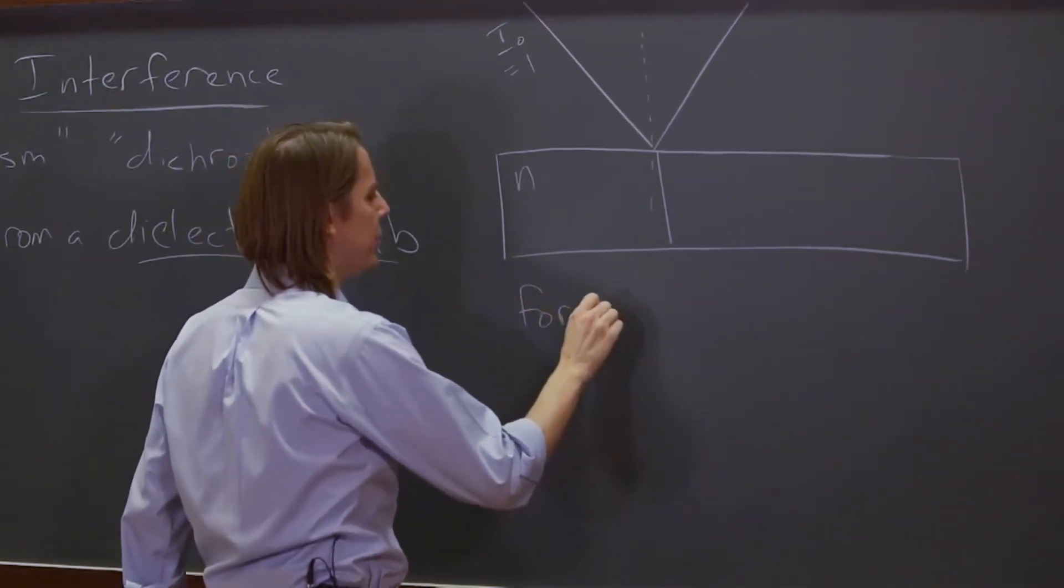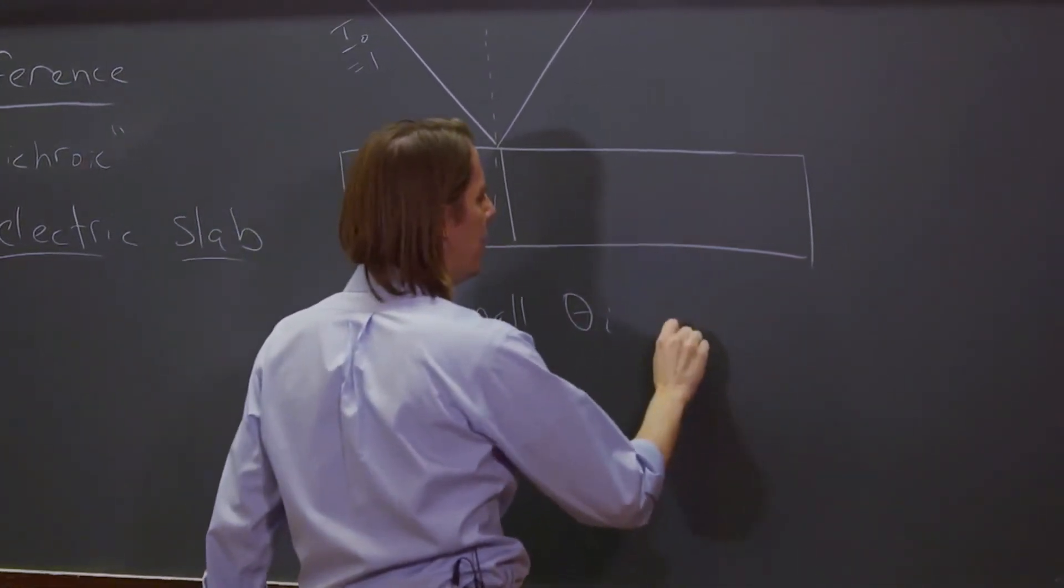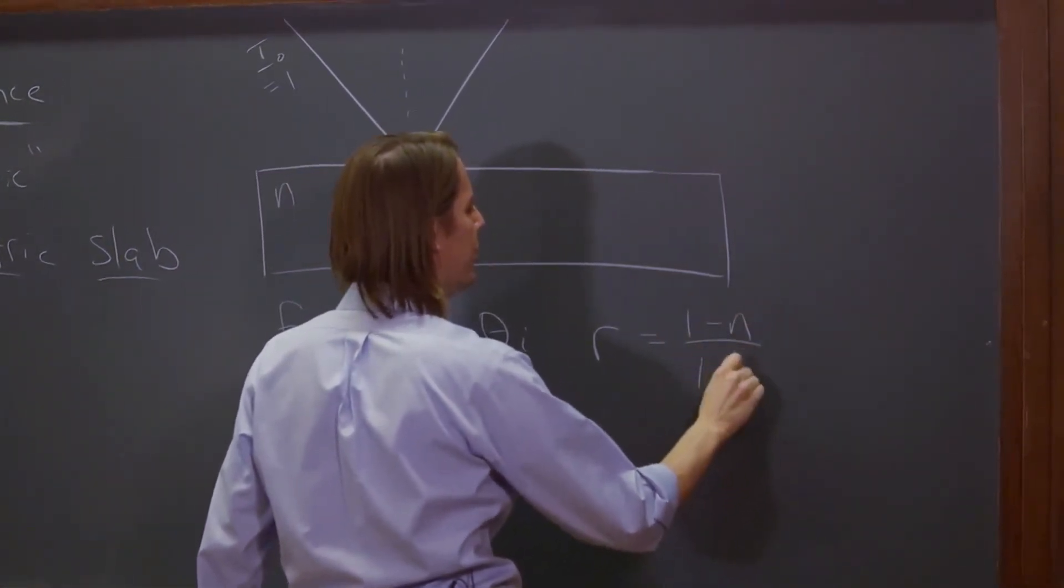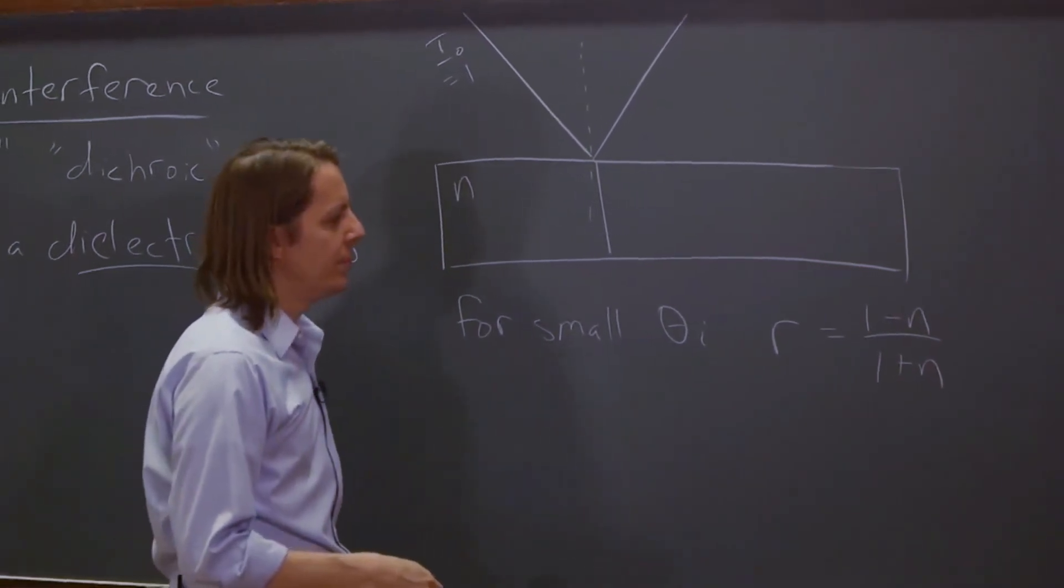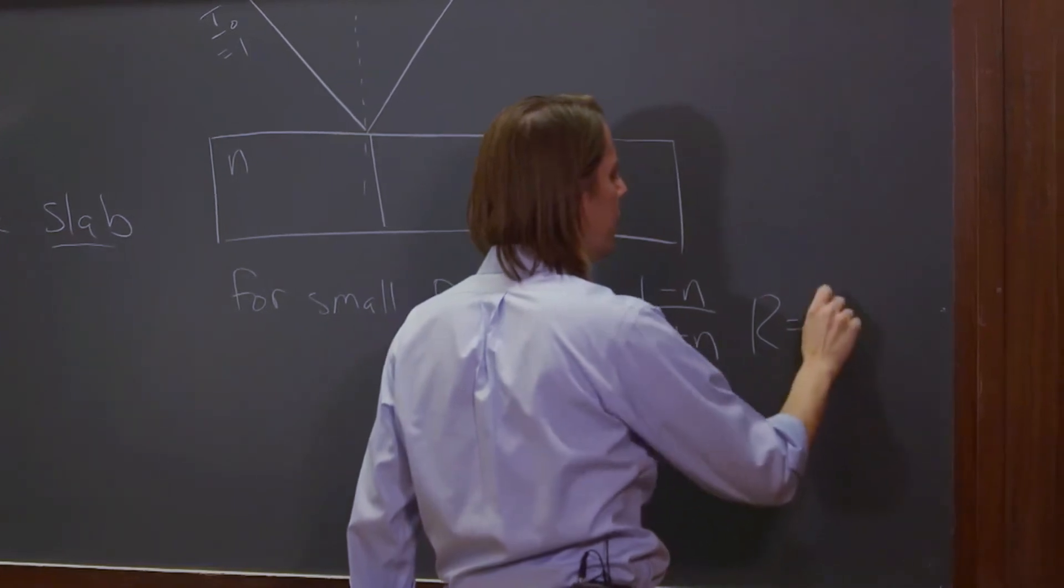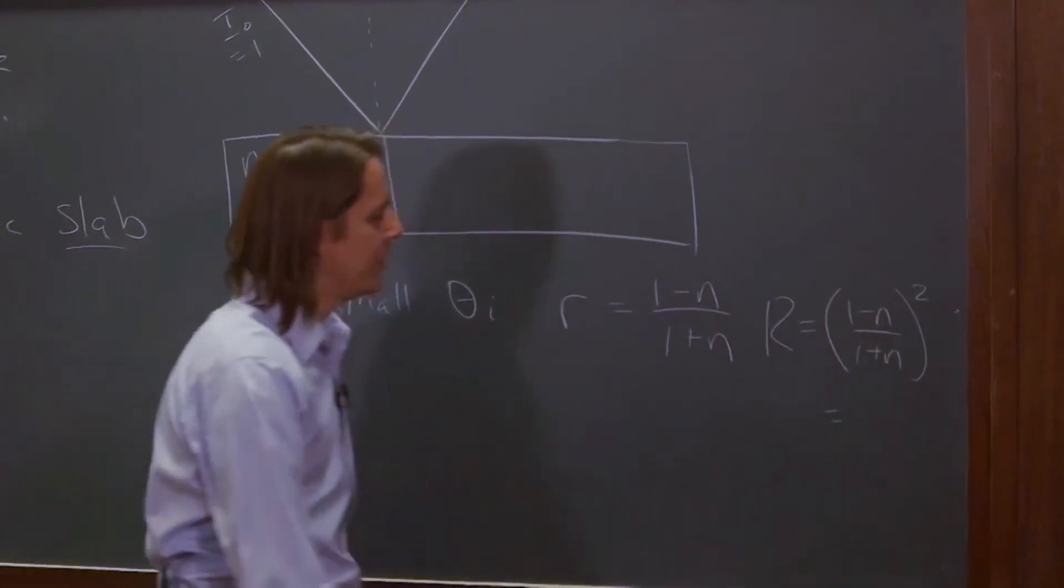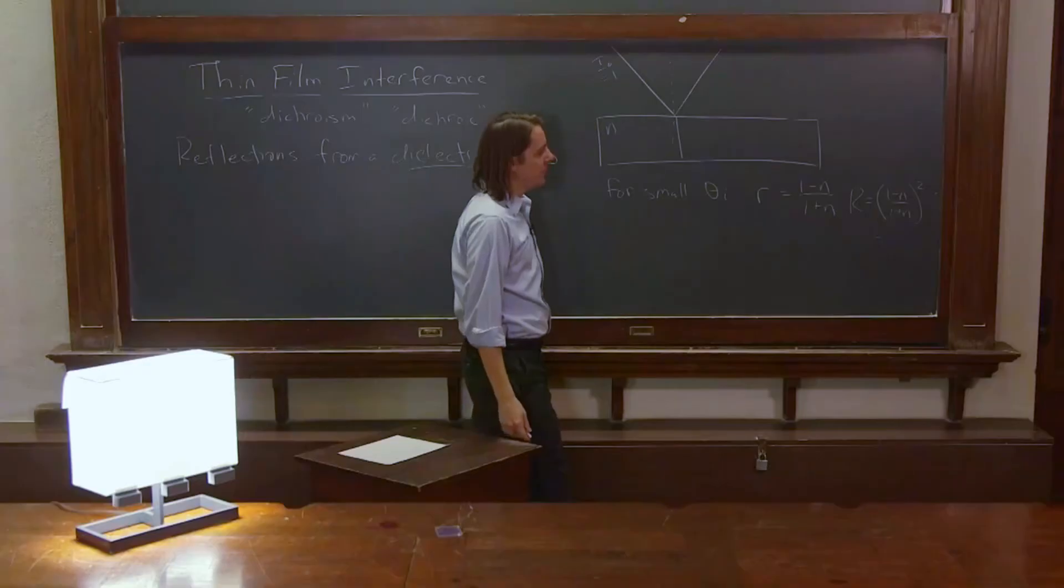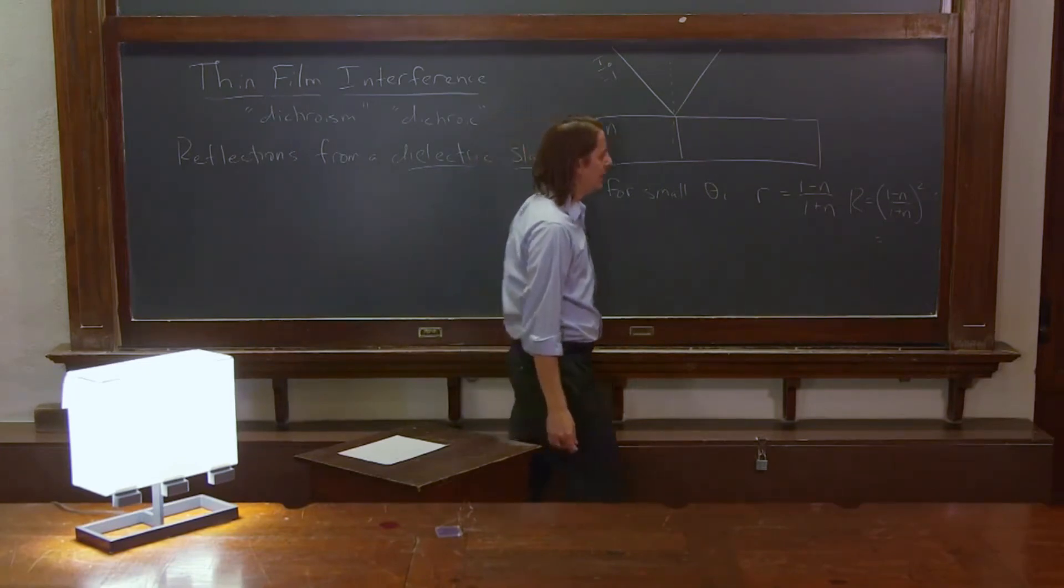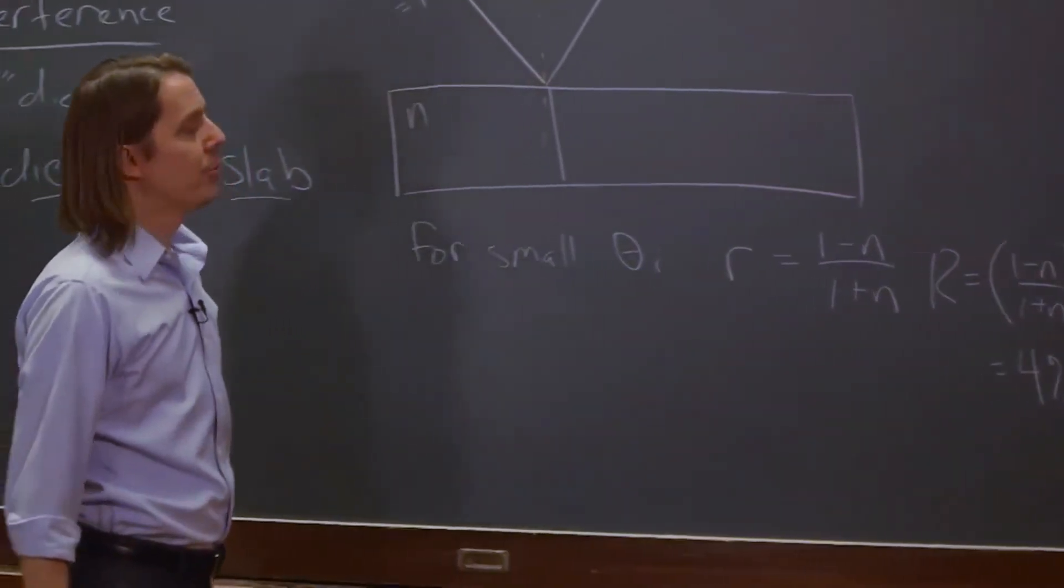So let's say, let's first do it for small angles. For small angles, r is equal to, in this case, one minus n over one plus n. All right? If you let theta be zero, that's what you'd get for r. And then big R is just that squared. Right? One minus n over one plus n squared. So I think we've done this before. If you're just talking about air and glass, you get one minus 1.5, about minus 0.5 over 2.5. That's 0.2. You square it. And you get about 4%.